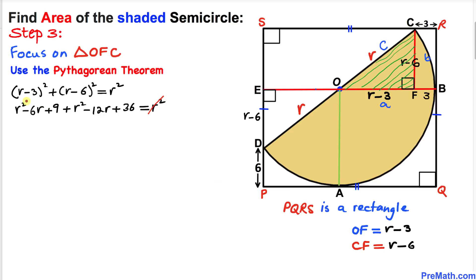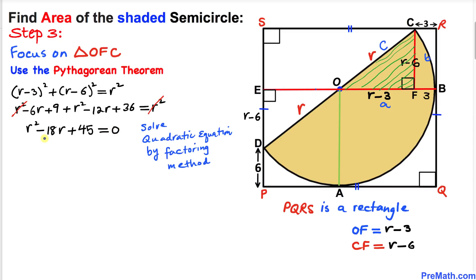Here we can see that this r squared on the right cancels out with the r squared terms on the left. Let's go ahead and combine the like terms, so we are going to have r squared minus 18r, and 9 plus 36 is going to become 45, equals 0.